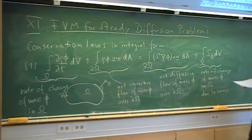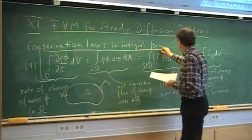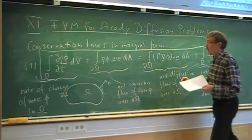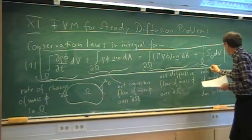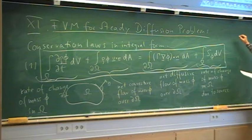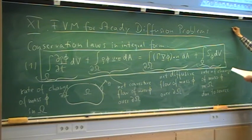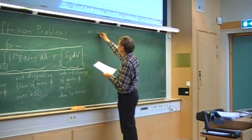That would be the integral form. We can also immediately write it in differential form, assuming the flow problem is smooth and phi is also smooth. That means we have the conservation laws either in integral form or in differential conservative form.